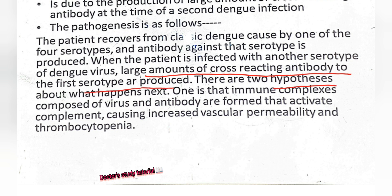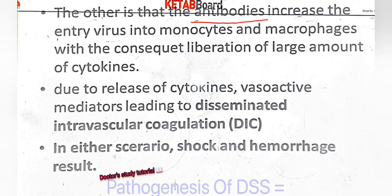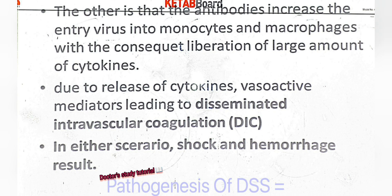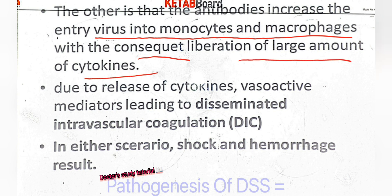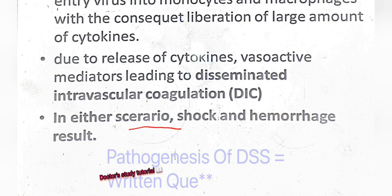There are two hypotheses about what happens next. One is that immune complexes composed of virus and antibody are formed that activate complement, causing increased vascular permeability and thrombocytopenia. The other is that antibody enhances entry of the virus into monocytes and macrophages, with consequent liberation of large amounts of cytokines and vasoactive mediators, leading to disseminated intravascular coagulation. In either case, shock and hemorrhage result.